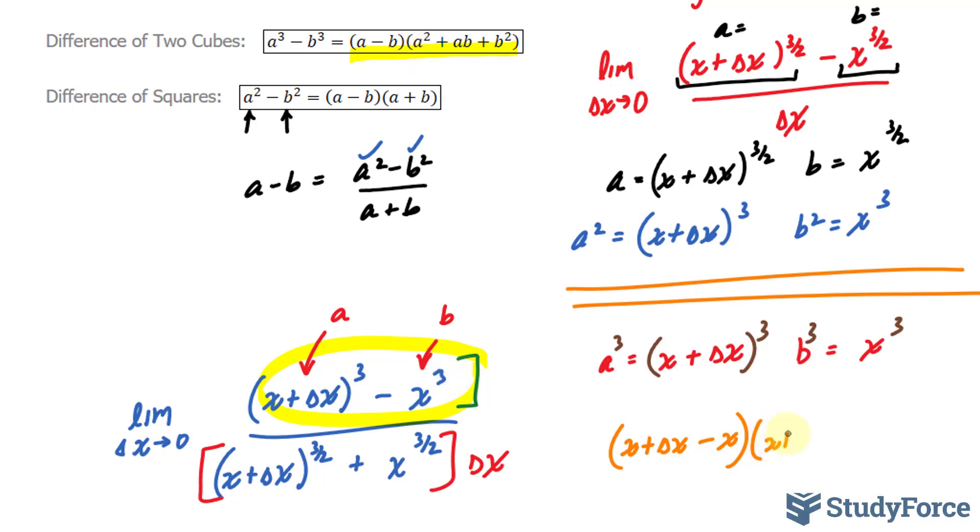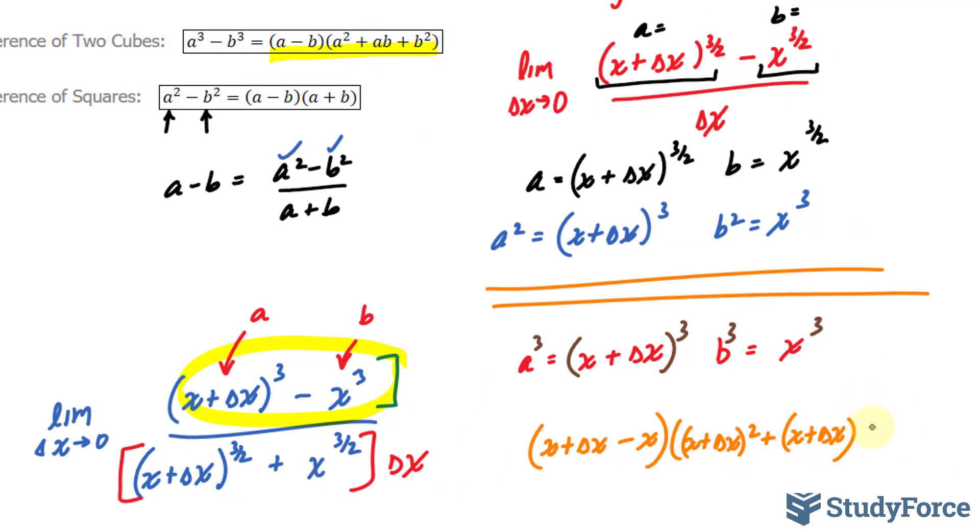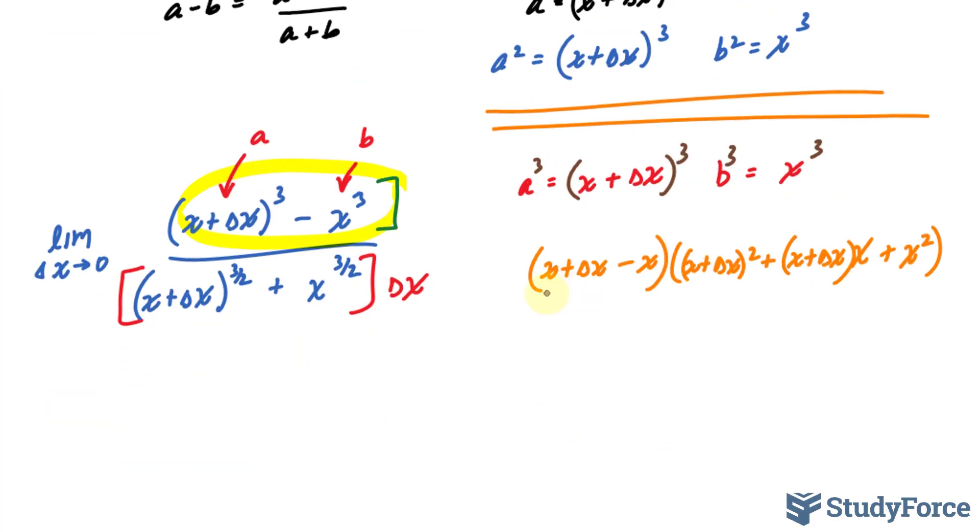A to the power of two, x plus delta x raised to the power of two plus x plus delta x times b which is x plus x raised to the power of two, all over this part. And remember we still haven't taken the limit.